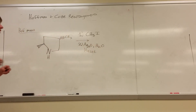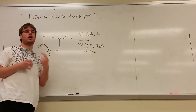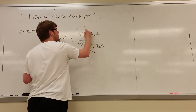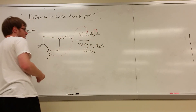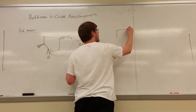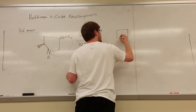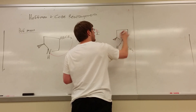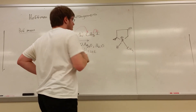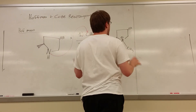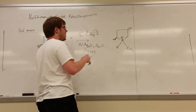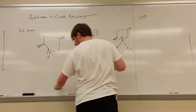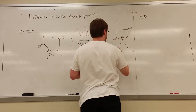Let's address the first step. If you remember what we talked about regarding how nitrogen likes to react, we saw that nitrogen will attack carbons with leaving groups on them and kick the leaving group out. So you should expect your first intermediate to look like a five-membered ring with nitrogen, a hydrogen, and then a methyl that we just added.